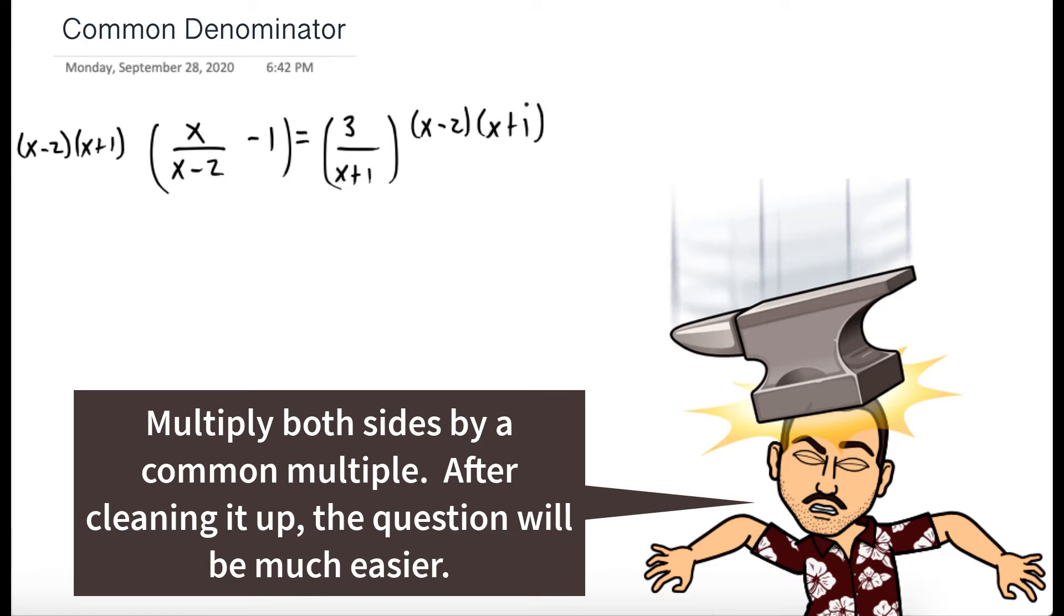Okay, and when we do that, on the right-hand side, the x plus 1's cancel out. On the left-hand side, the x minus 2 in the first part of the product cancels out. But what's left on the second term is a negative x minus 2 times x plus 1. And that left-hand side is equal to 3 times x minus 2.